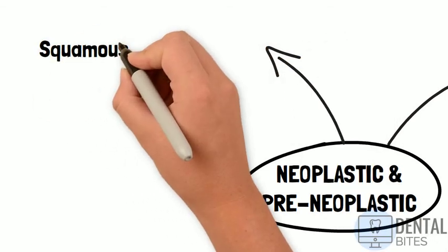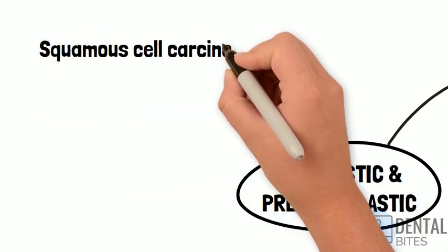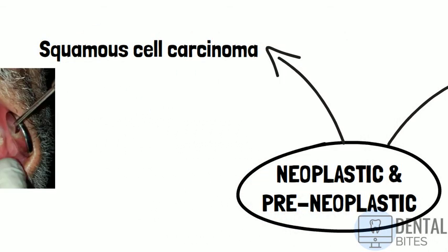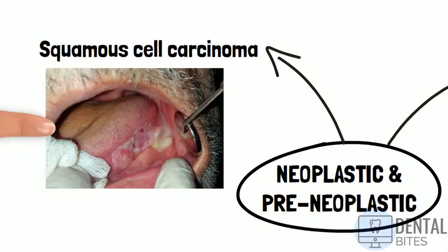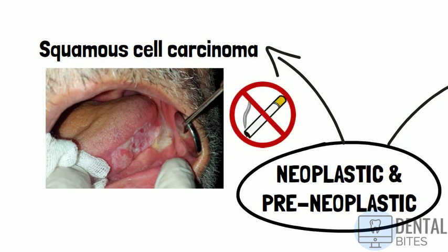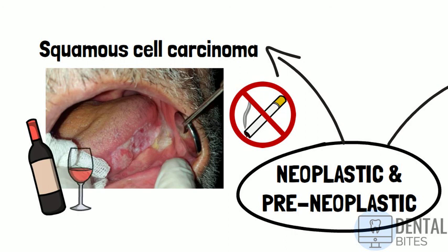Squamous cell carcinoma can present as a white patch at any intraoral site, but the tongue, floor of the mouth, and the retromolar region are the most common areas involved. Tobacco and alcohol are the two most important risk factors for its development.